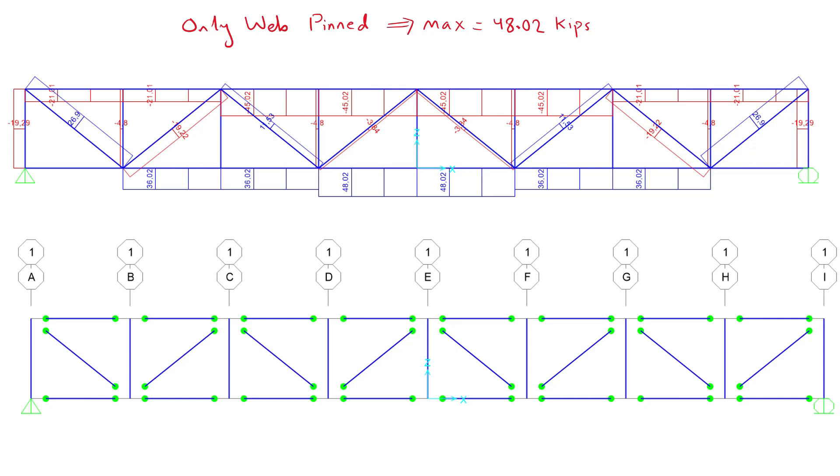Or, we can model the truss by fully releasing the moment at the web and chord intersections. And by that we receive a maximum tensile force of 48.02 kips which is almost exactly the same as tension calculated by hand under the same assumptions.